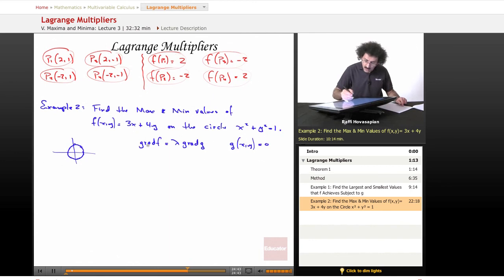The gradient of f - the partial derivative with respect to x is 3, the partial derivative with respect to y is 4. So we have 3, 4 equals lambda times the gradient of g. That's going to be 2x and 2y. So lambda, or I'll write 2 lambda x and 2 lambda y. This corresponds to that.